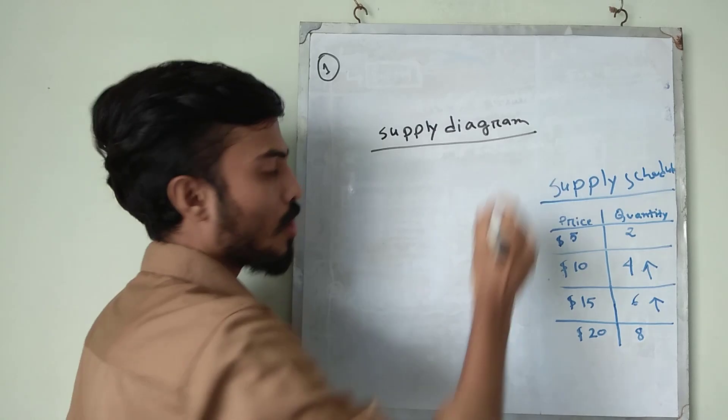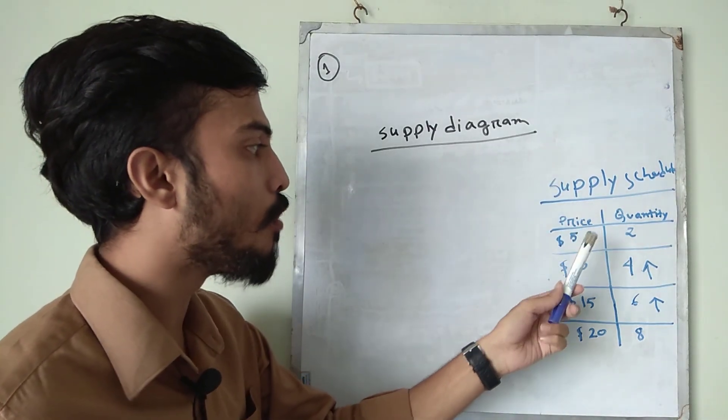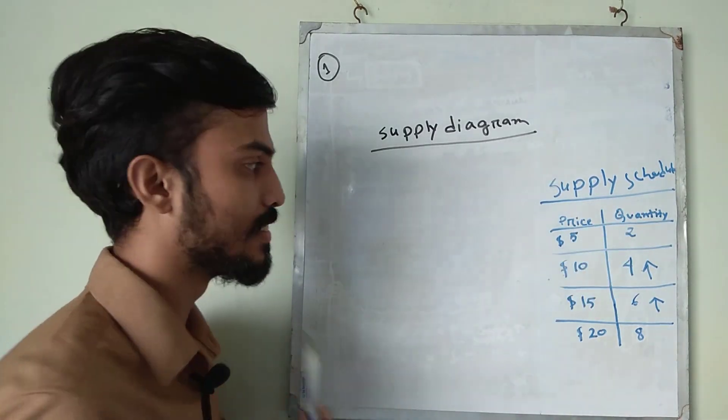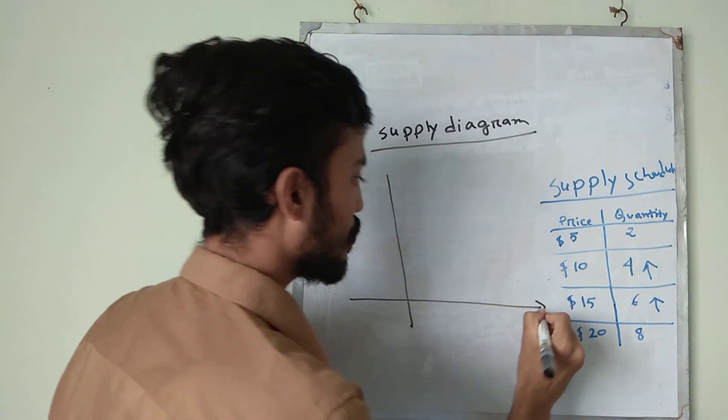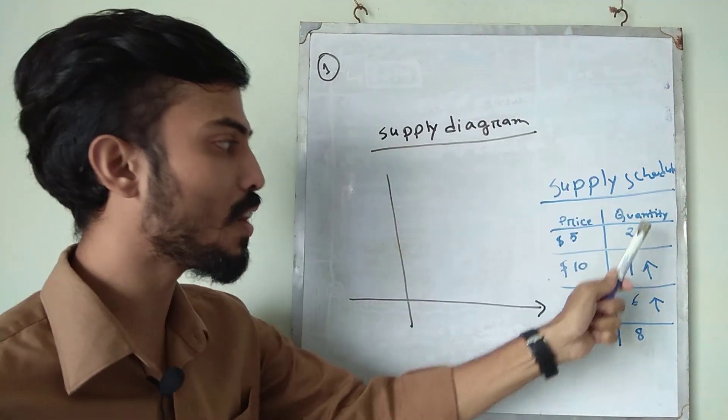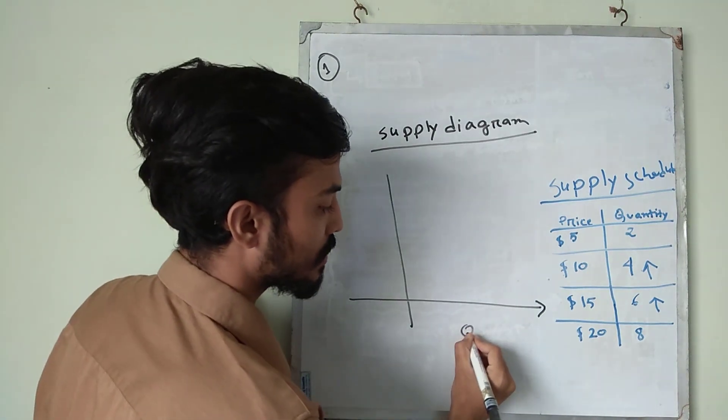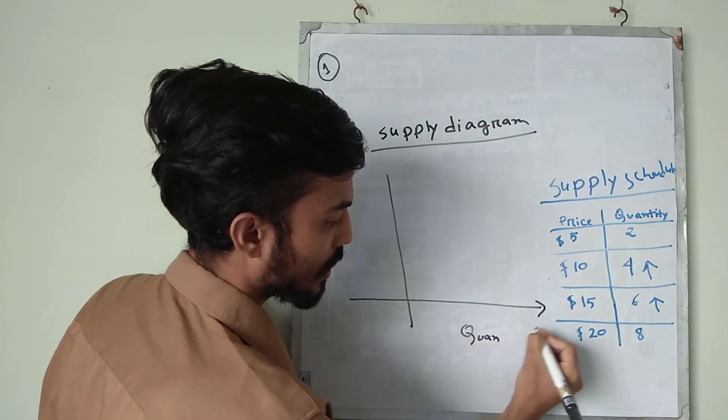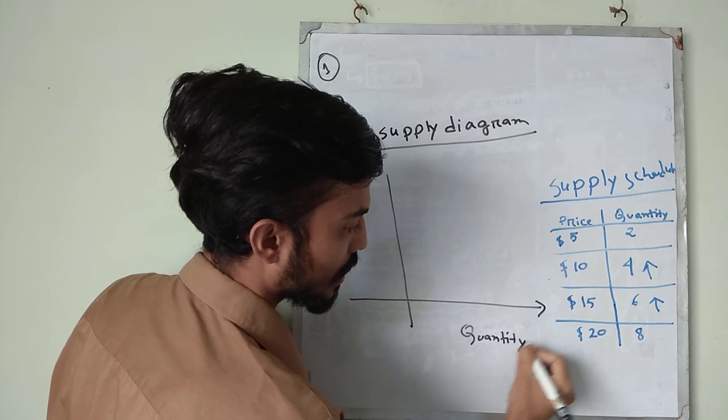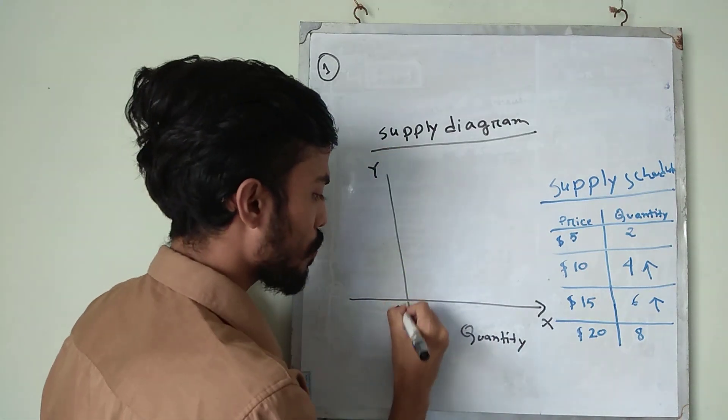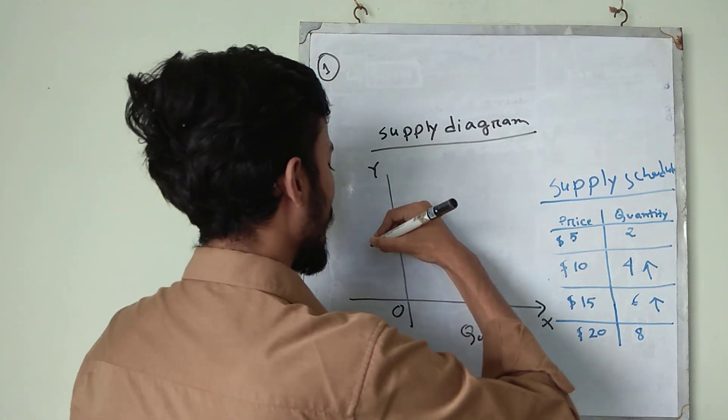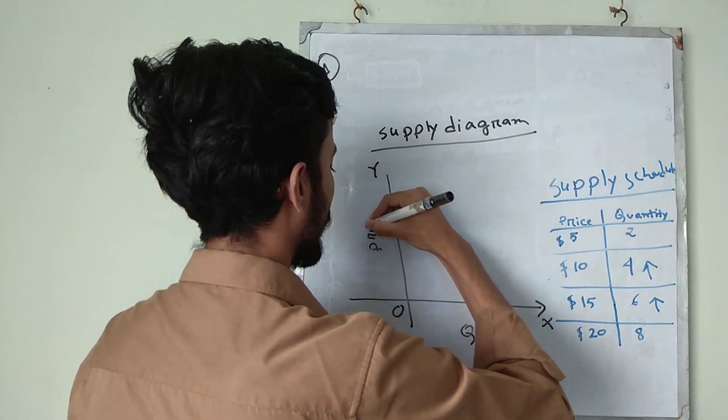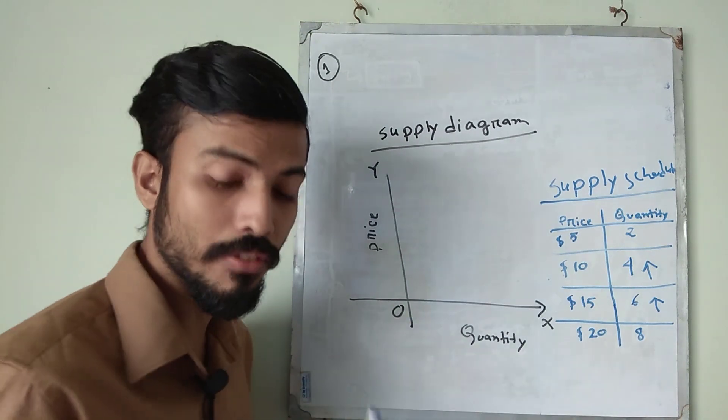So we will put the value of quantity in x-axis. That means quantity will be in x-axis. Here is x-axis. Here is y-axis. And put the value of price in y-axis. Price. Now we will put the value.